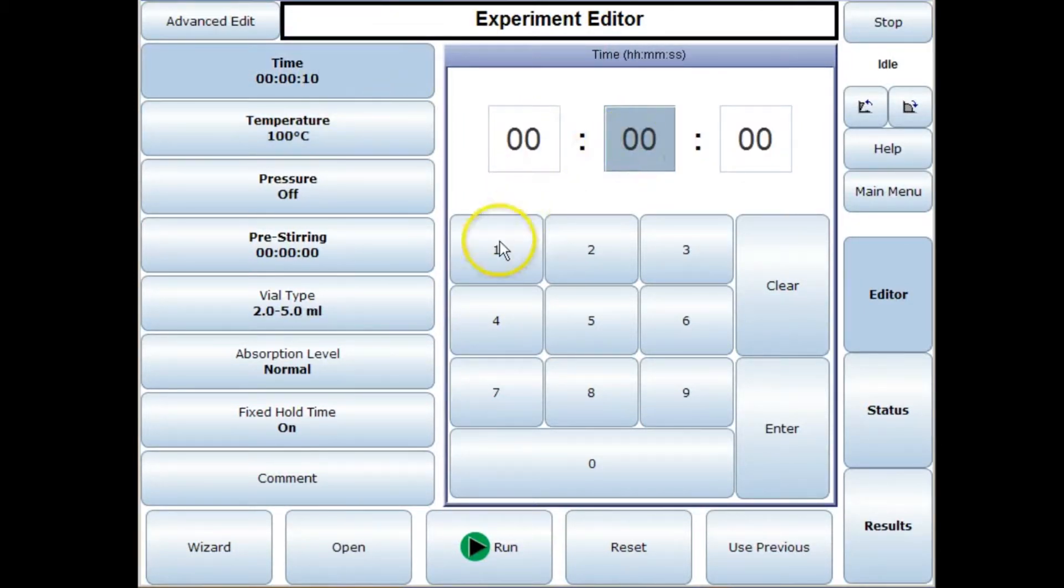So let's say we want to put a reaction on for 12 minutes. We enter the time, we press enter, then we select the temperature for the reaction. Let's say 100 degrees. We press enter.